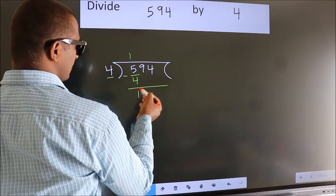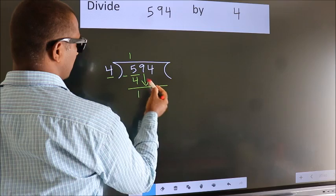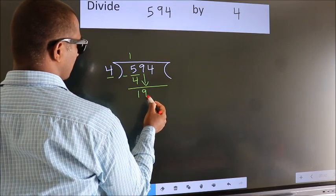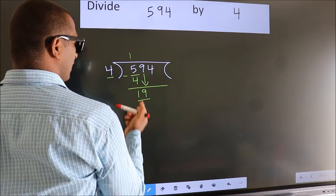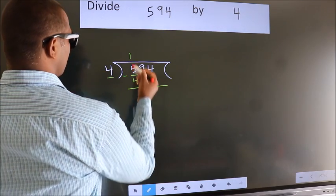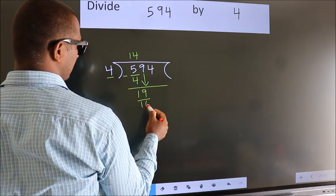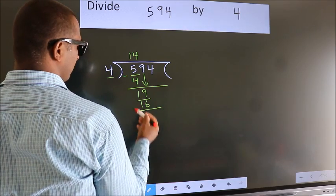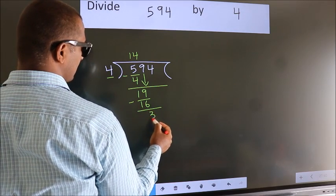After this, bring down the beside number, so 9 down, so 19. A number close to 19 in the 4 table is 4 fours, 16. Now we subtract, we get 3.